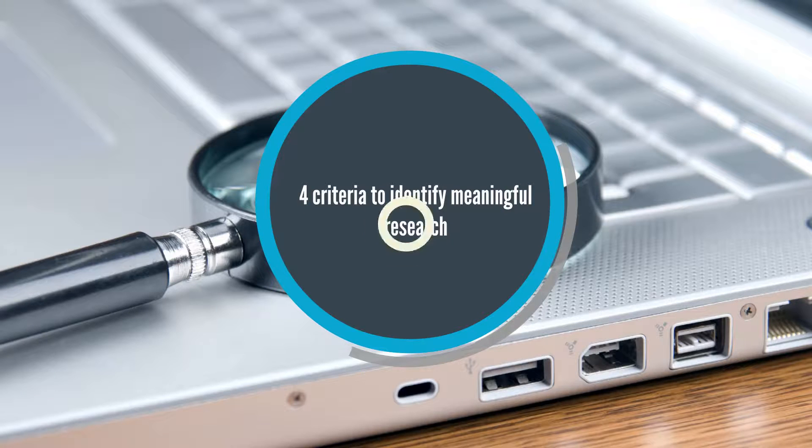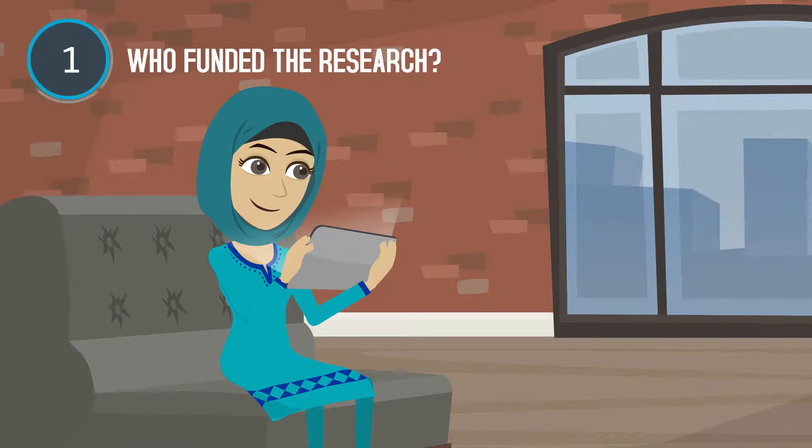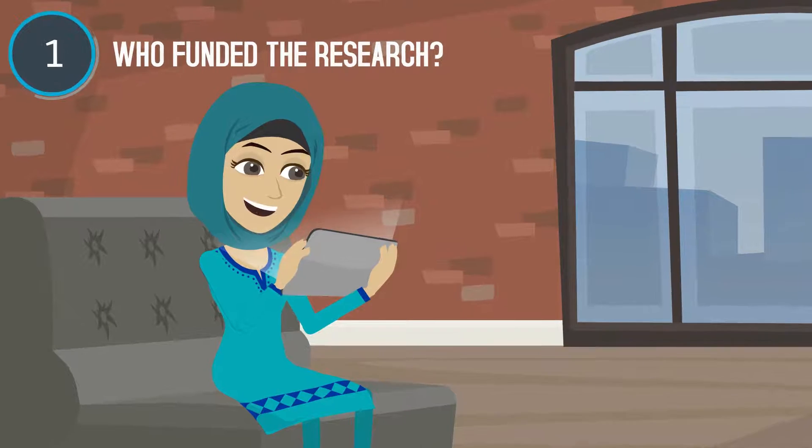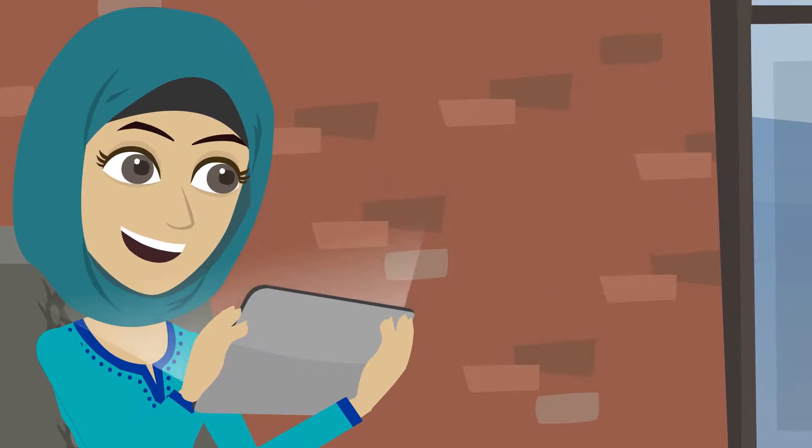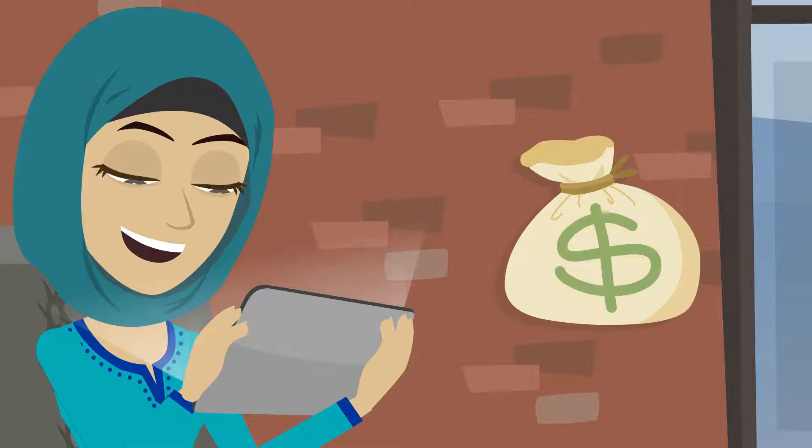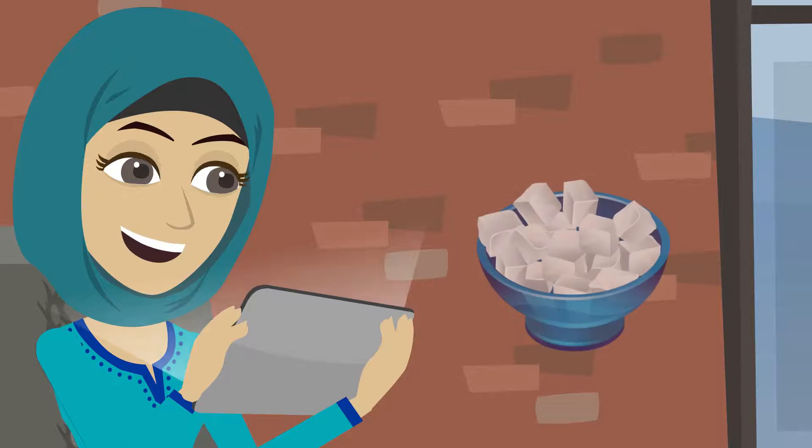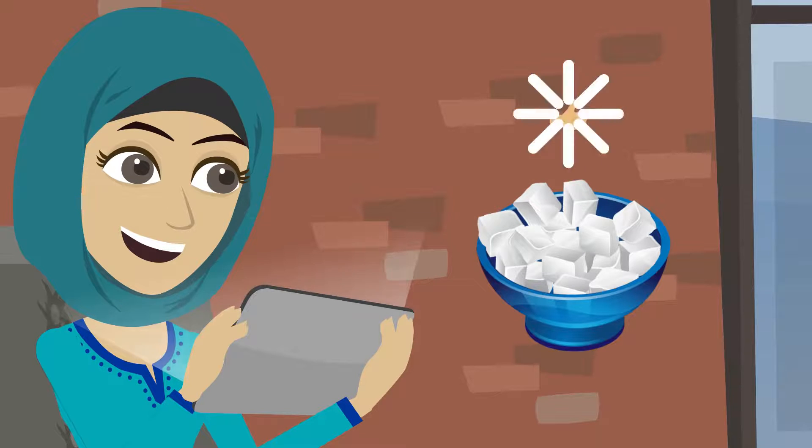Who funded the research? Funding information is often provided under the author information of a study. This is a great way to identify any conflict of interest. For example, if a sugar company funded the study suggesting that sugar was good for you, that would suggest a serious research flaw.